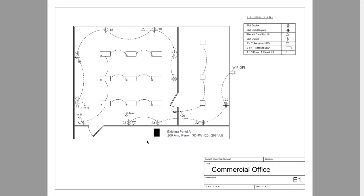At the bottom of the drawing, we see a panel called 'existing panel' — a 200-amp panel, three phase, four wire, 120/208 volt. On the top right, we see an electrical legend showing the symbols and a description of the symbols that are on the drawing.